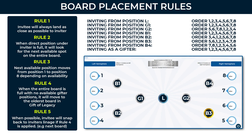A board does not simply become the newest board when there's activity on it — it stays the oldest board until it gets destroyed. Every time a board gets destroyed, two new boards are created from the two guides that were on that board, and those two boards become the newest boards in Gift of Legacy. This runs separately for all levels — bronze, silver, gold, and platinum each have their own oldest board. The system will fully populate the oldest board and then flip it, creating the two newest boards.